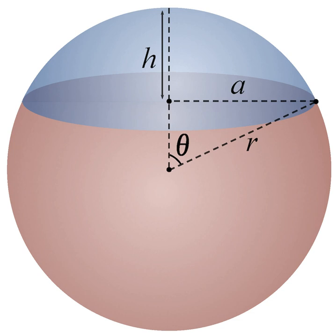See also: Circular segment — the analogous 2D object. Solid angle — contains formula for N-sphere caps. Spherical segment. Spherical sector. Spherical wedge.